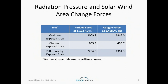Looking at the maximum forces at the apogee and perigee of Eros: since we can theoretically rotate Eros and change its exposure area, we see maximum force differences of 1,361 Newtons at apogee and 2,254 Newtons at perigee. A Newton is about a quarter of a pound, to give a ballpark sense of the values involved.